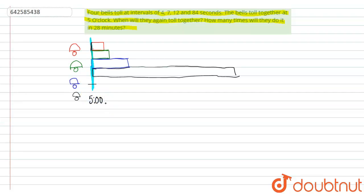So now the question is, when are they going to ring together again? If you look at this question carefully, we have to first see when will all the bells ring again. After every 4 seconds, the red bell is going to ring: 4 seconds, 8 seconds, 12 seconds, 16, 20, 24, and so on.